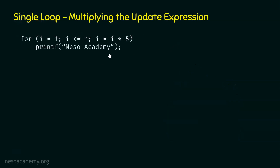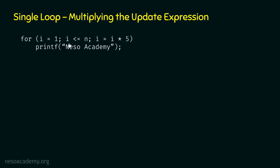This is the example loop and our job is to determine the time complexity of this loop. We can observe that the first statement is i equal to 1, which is the initialization statement — i is initialized to 1. Then we have the conditional statement i less than or equal to n, meaning i is compared with n. And then we have i equal to i multiplied by 5 as the update expression, where the variable i is multiplied by a constant — the constant here is 5. Within this for loop, we have the print function.